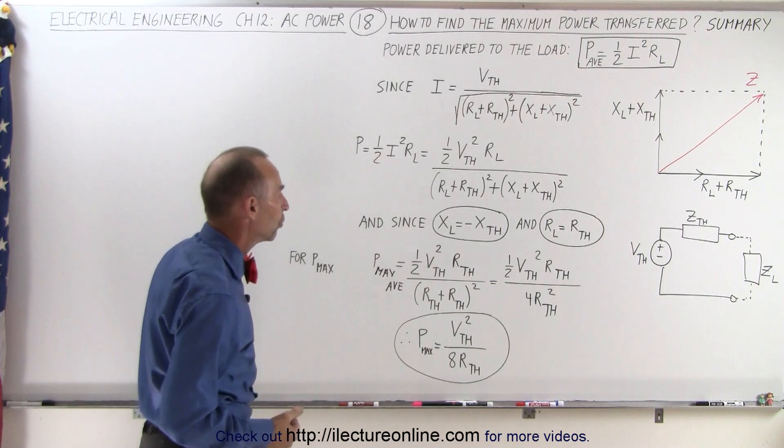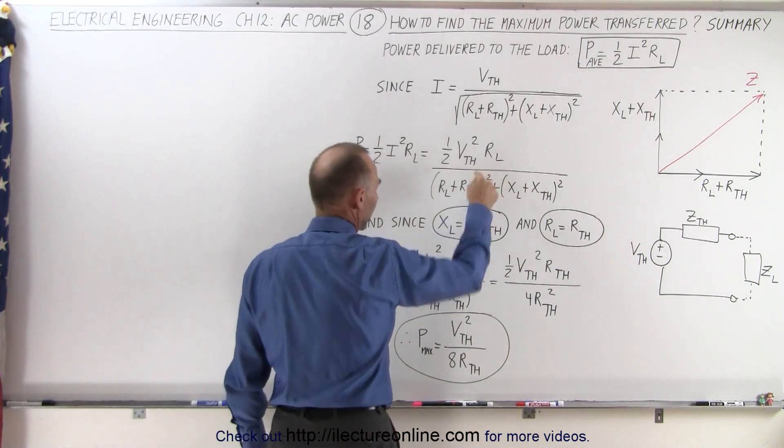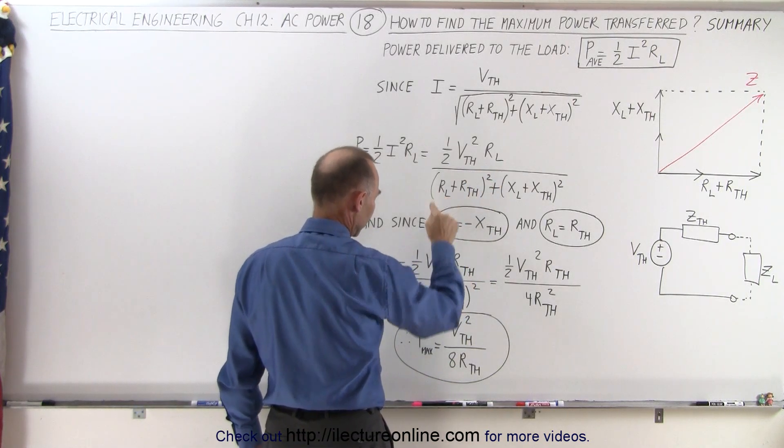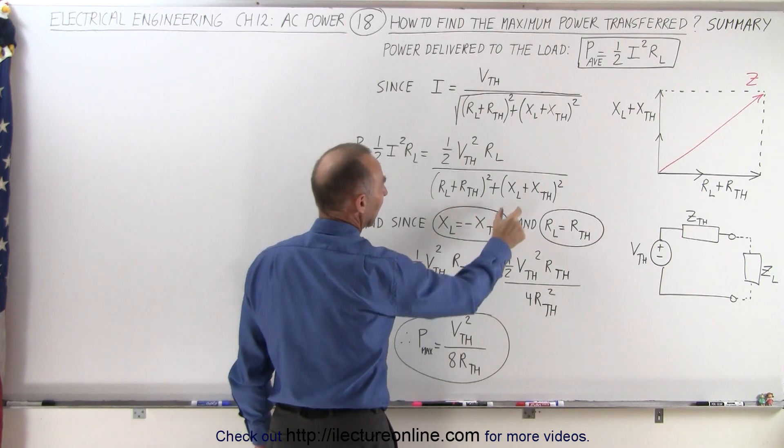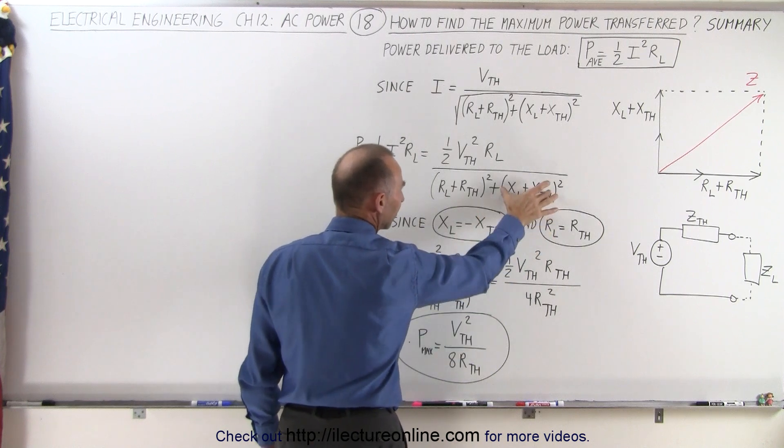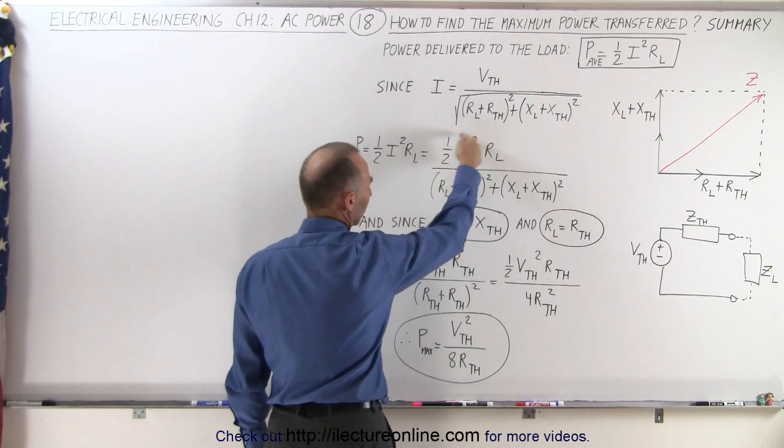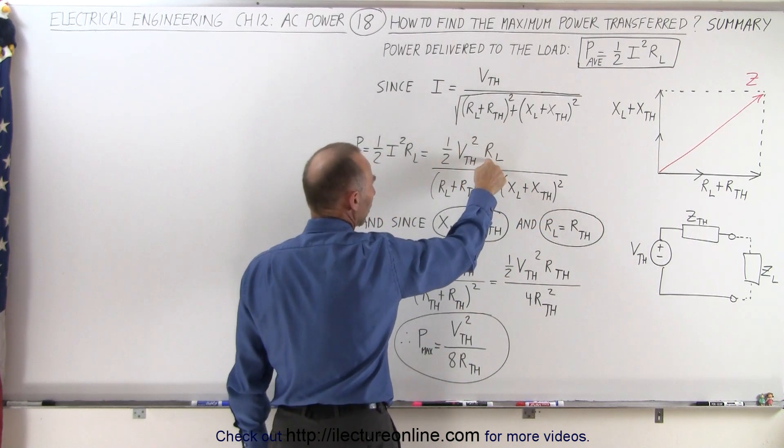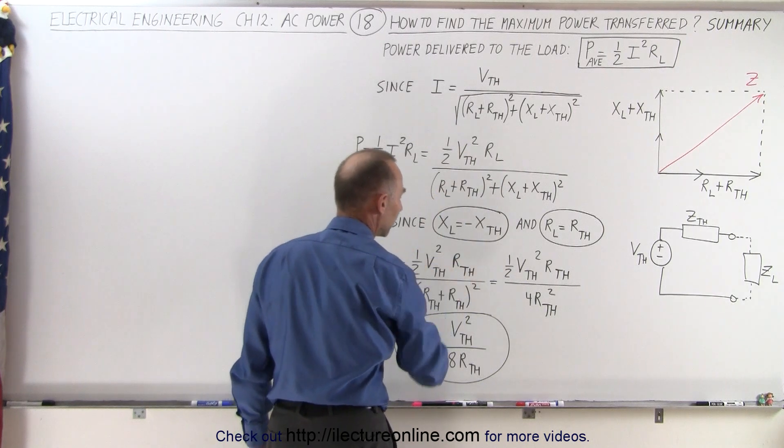If we then replace those two, we can replace the load resistor by the Thevenin resistor. The load resistor by the Thevenin resistor here, and since x sub l now becomes equal to the negative x of the Thevenin equivalent circuit, this then goes to zero and we end up with just this portion of the equation with R sub L replaced by R of the Thevenin circuit.